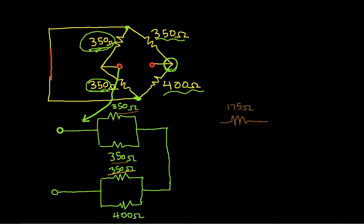And let's now look at the 350-ohm resistor in parallel with the 400-ohm resistor. A 350-ohm resistor in parallel with the 400-ohm resistor is 350 times 400 divided by 350 plus 400, which turns out to be 186.67 ohms.